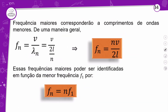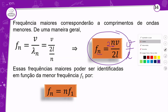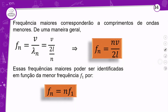Frequências maiores corresponderão a comprimentos de onda menores — isso é inversamente proporcional. A frequência fundamental é F1 com n=1, que vai ser V sobre 2L. Se n=2, vai ficar V sobre L, e assim por diante. Essas frequências maiores podem ser identificadas em função da fundamental: a frequência 2 é 2 vezes a frequência 1, e a frequência 3 é 3 vezes a frequência 1.